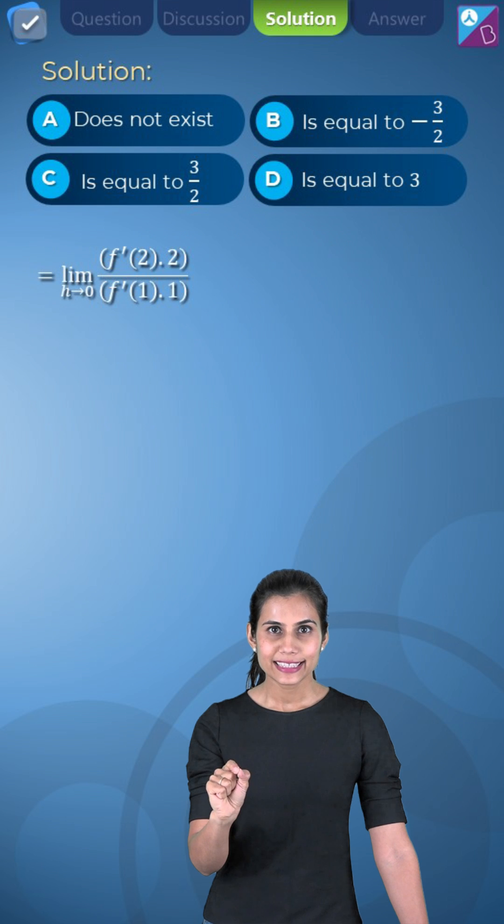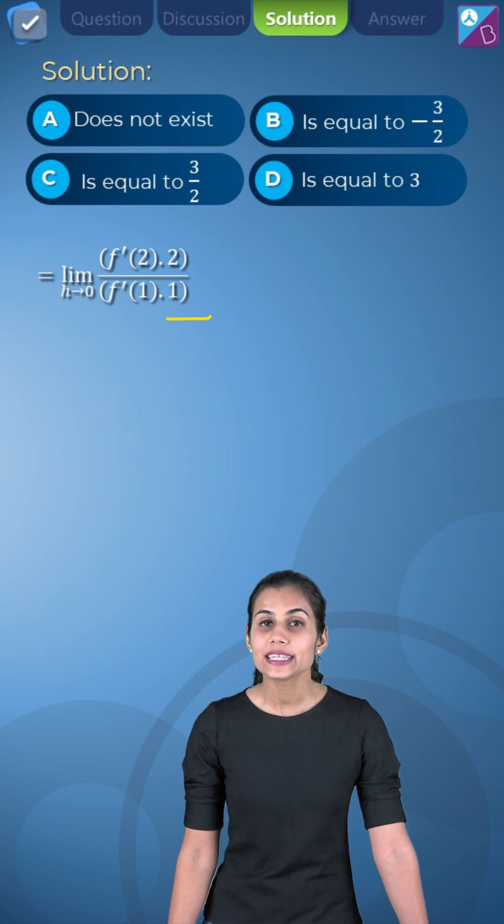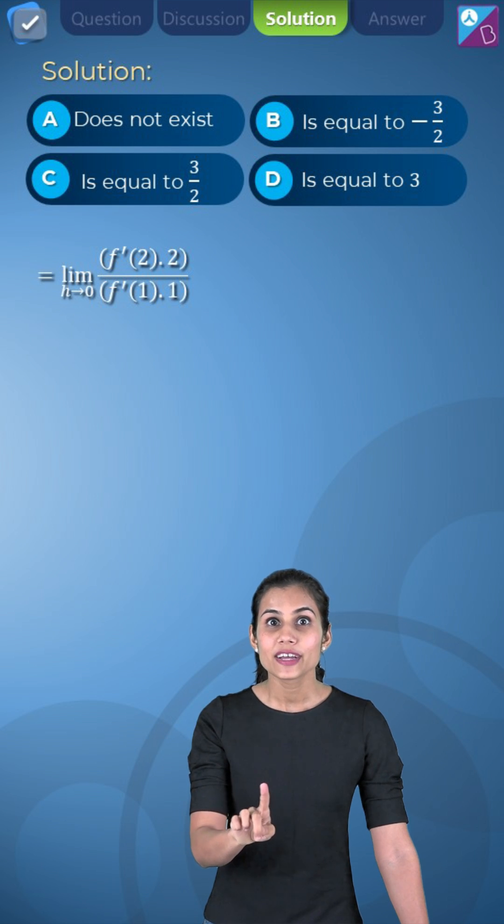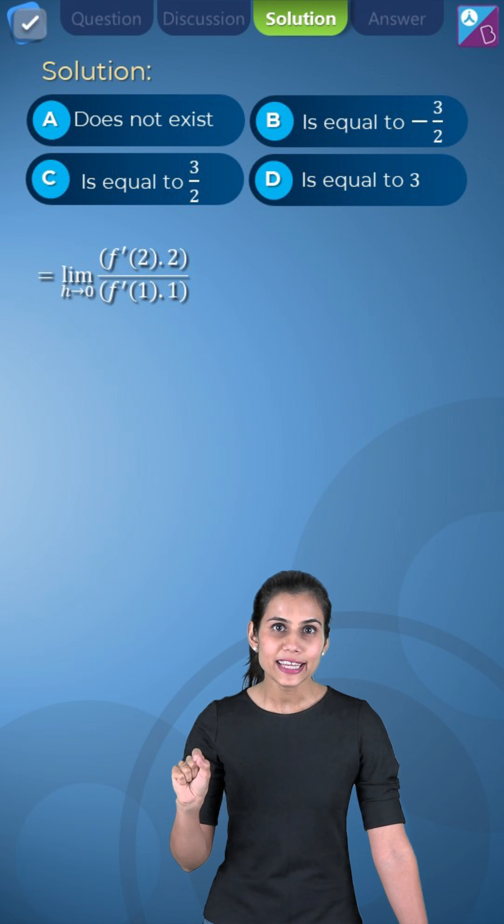Once we simplify this, it gets reduced to f'(2) times 2 upon f'(1) times 1, which itself is a constant free from h. So this only will be the limiting value.